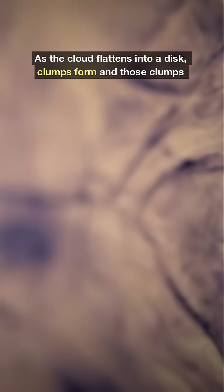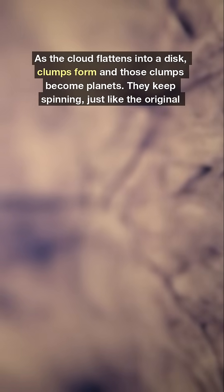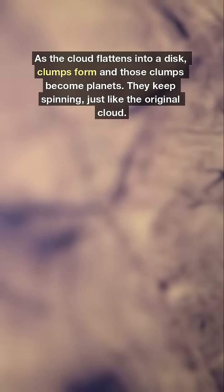As the cloud flattens into a disk, clumps form, and those clumps become planets. They keep spinning, just like the original cloud.